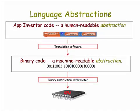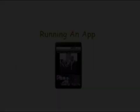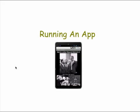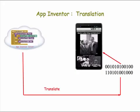The important point for now is that all of these languages, whether high-level or low-level, are abstractions that provide constructs and instruction sets that let us, as programmers, deal with the computer itself. Let's focus on what happens when we run an app. We now know that our I Have a Dream app has to be translated into machine language. In the previous tutorials, you learned two ways to do this: one by using the Connect to Companion menu, and the other by using the Package menu.